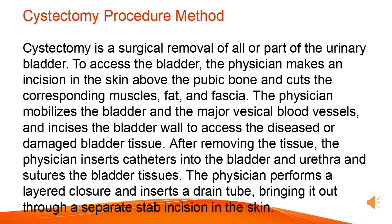Cystectomy is a surgical removal of all or part of the urinary bladder. To access the bladder, the physician makes an incision in the skin above the pubic bone and cuts the corresponding muscles, fat, and fascia. The physician mobilizes the bladder and the major vesicle blood vessels, and incises the bladder wall to access the diseased or damaged bladder tissue.